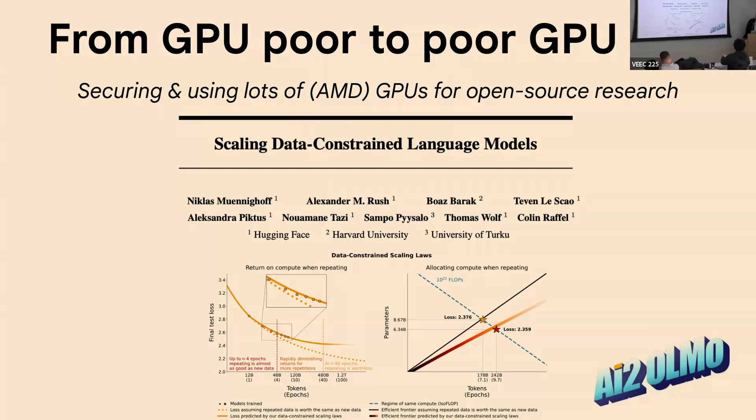All right, thanks. I'm Nicholas, and I will talk about going from GPU poor to GPU rich. Specifically, how we got lots of AMD GPUs for open source research, mainly drawing from this paper, scaling data-constrained language models, but also some insights I was lucky to have with ELNA's Ulmo project.